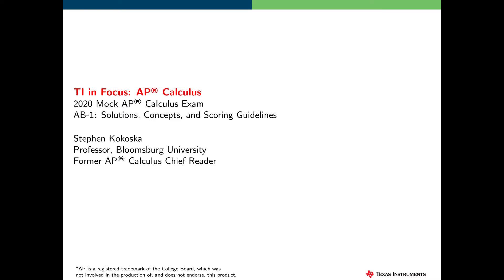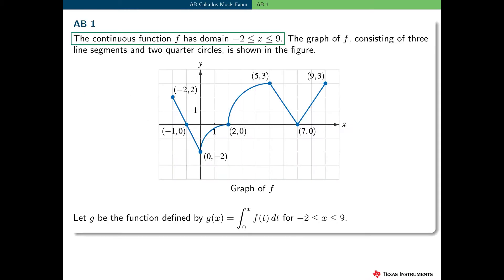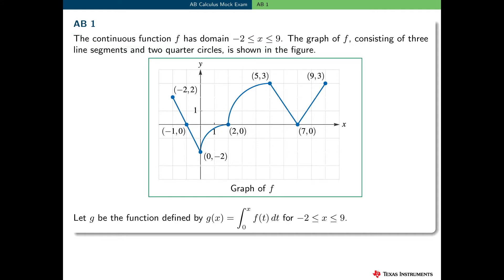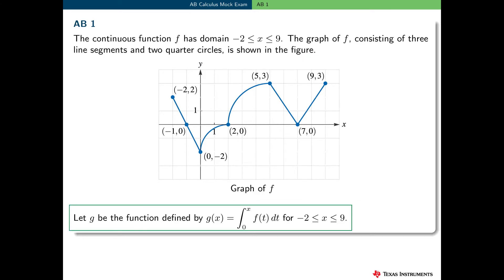My name is Steve Kokoska. I'm a professor at Bloomsburg University of Pennsylvania, and I'm a former AP Calculus chief reader. Form AB, Question 1 involves a continuous function f with domain minus 2 less than or equal to x less than or equal to 9. The graph of f is given, and it consists of three line segments and two quarter circles. A new function g is defined as g of x equals the definite integral from 0 to x of f of t dt, for minus 2 less than or equal to x less than or equal to 9.